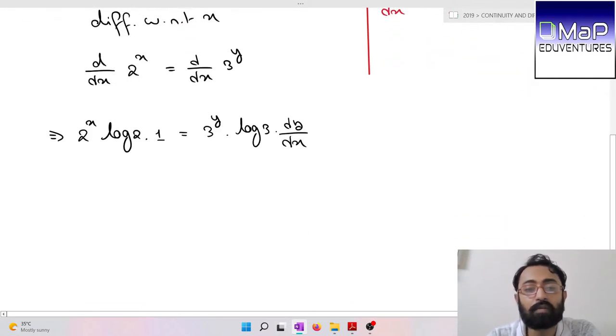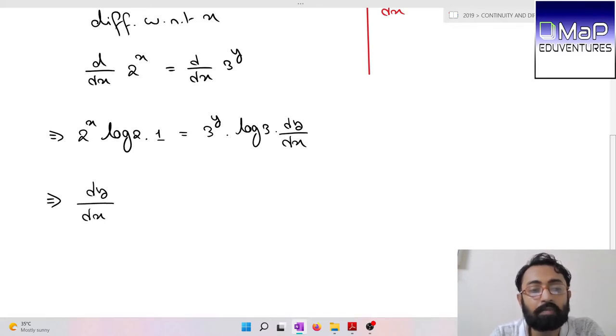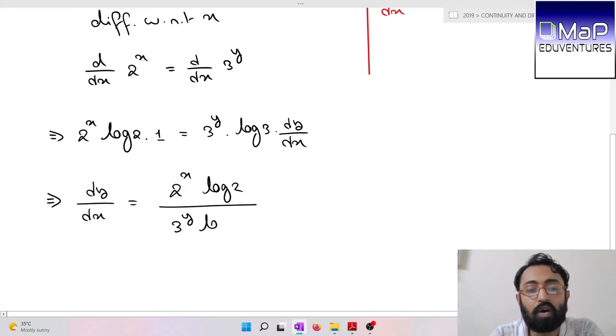So we have dy/dx equals 2^x log 2 divided by 3^y log 3. If we look at what's given, 2^x equals 3^y, so we can cancel 2^x and 3^y.